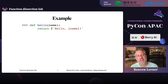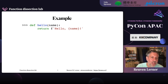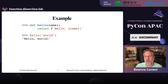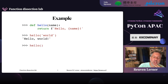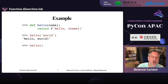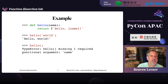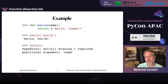If I say def hello(name): return f'hello {name}', and I run hello('world'), I get back the string 'hello world'. But what if I call hello without any arguments? I get an error message. And unlike many other languages, there's no way in Python to define hello with zero arguments, hello with one argument, hello with two arguments — because when we define hello, we are assigning to the variable hello.